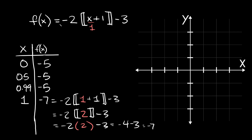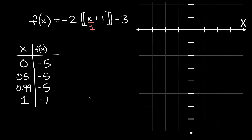Plotting: we start at (0,-5) with a closed circle, with a flat step through 0.5 and 0.99. At x=1 there's an open circle and the function jumps down to (1,-7) with a closed circle — a drop of 2 units. Each step is 1 unit long. Going in the positive direction we have open circles at the right side of each step, and continuing in the negative direction we go up 2 units over 1, repeating forever.